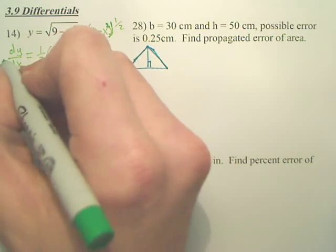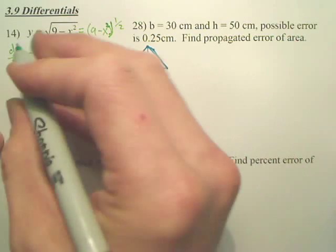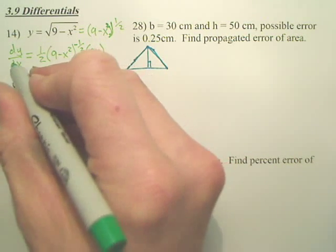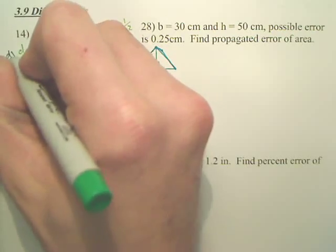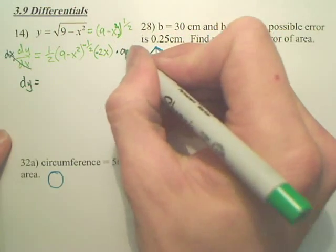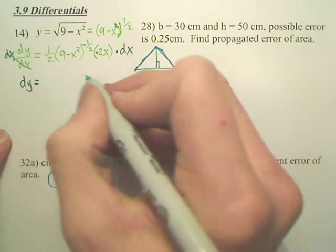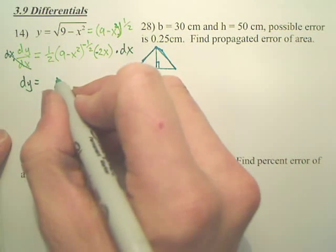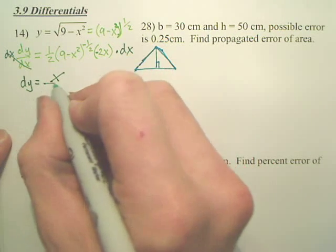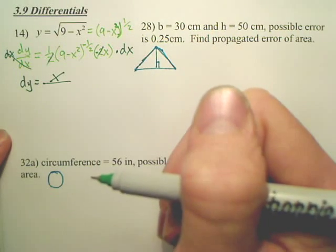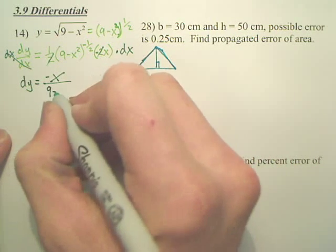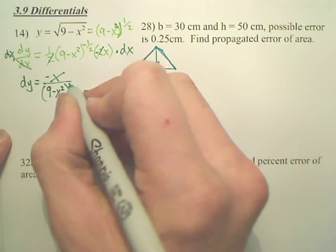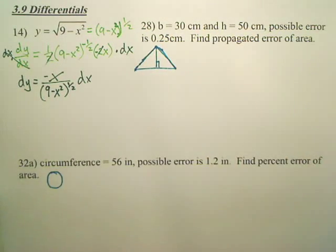My differential is simply, you take this derivative and you multiply the dx over. So you end up with dy, you multiply both sides by dx. When you multiply both sides by dx, that cancels and you end up with, let's see, if we simplify this, isn't that going to be x over, are these 2's going to cancel? So that would be negative x over 9 minus x squared to the 1 half dx. That would be your answer.